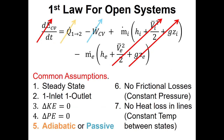Because this cycle is a series of open system processes — that's our second big question: are the processes modeled as open or closed — we model the processes as open systems and use the open version of the first law. Assumptions we make moving through each component include: steady state, one inlet and one outlet, negligible kinetic and potential energy, adiabatic for compressors and turbines, passive for heat exchangers, no friction losses, heat addition and rejection at constant pressure, no pressure drops between components, and no heat losses between components.